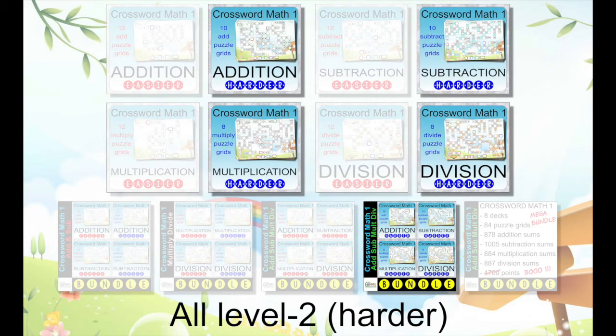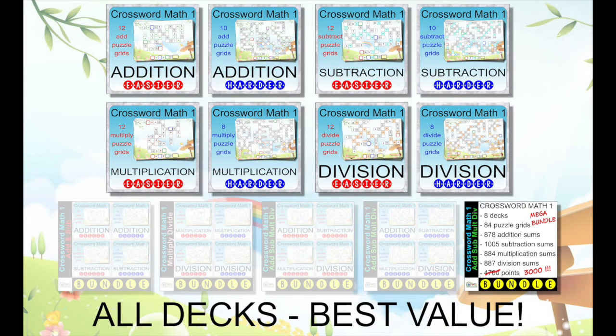All the level 2 decks, which include more challenging sums, including numbers up to 50, 100, 500, and 1,000. For the best value, the mega bundle includes everything.